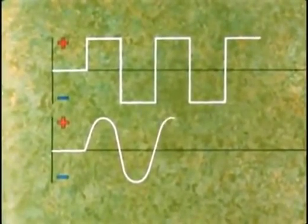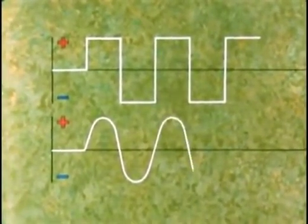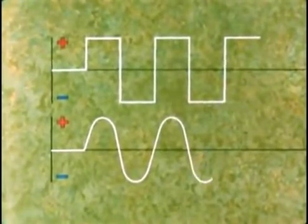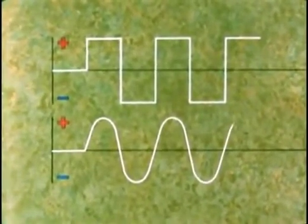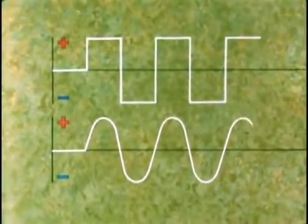Gradual build up one way, decay. Build up the other way, decay again, and so on. This produces the sine wave.